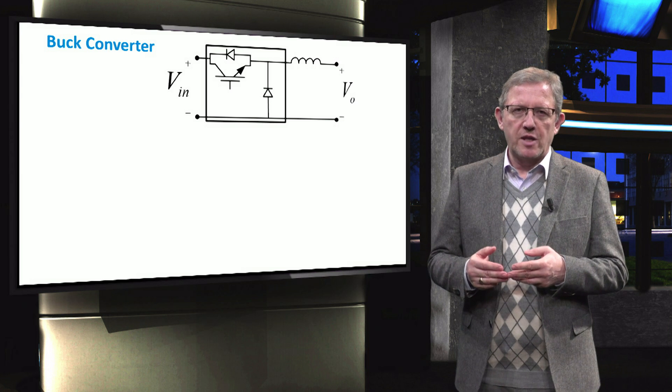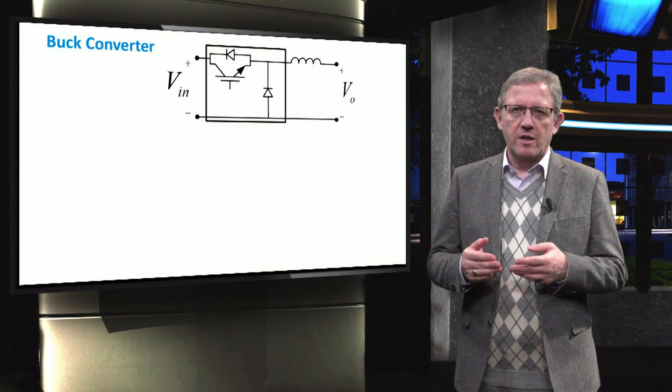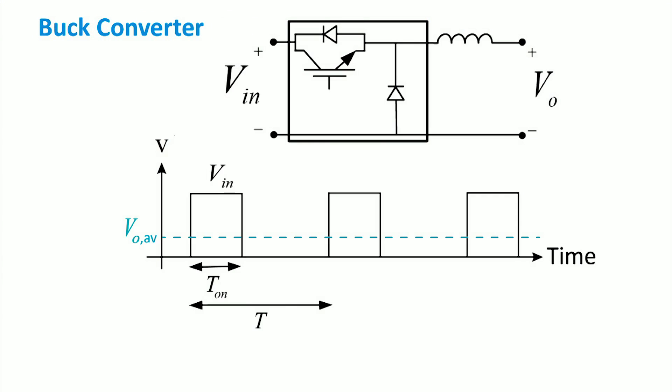The inductor is the main responsible for smoothing out the output current. In the figure we show the output voltage of the converter versus time.